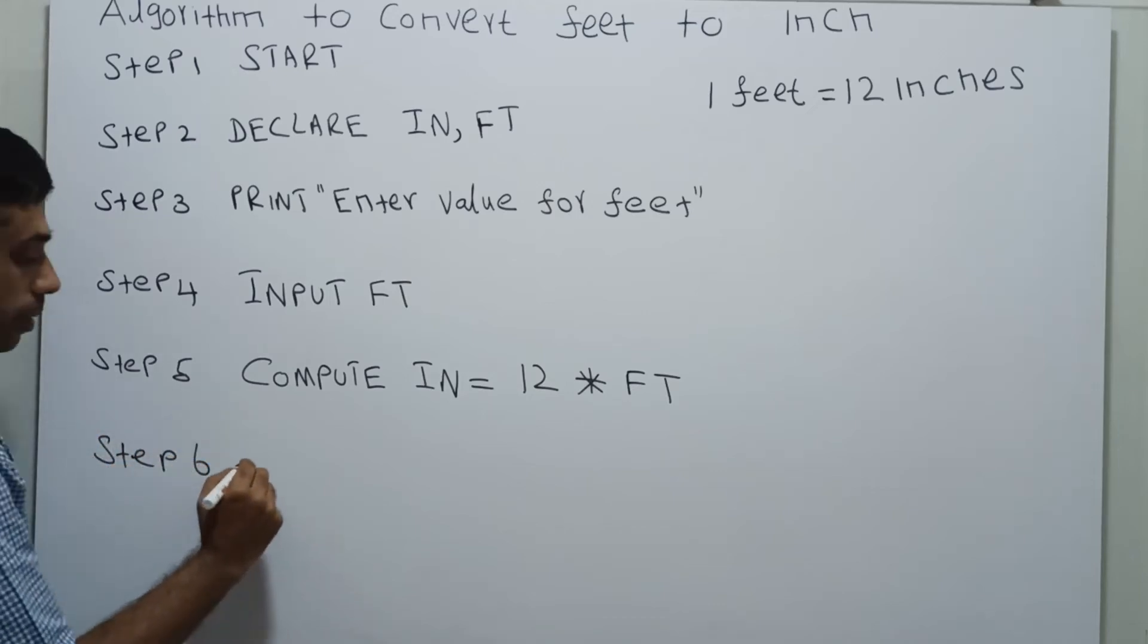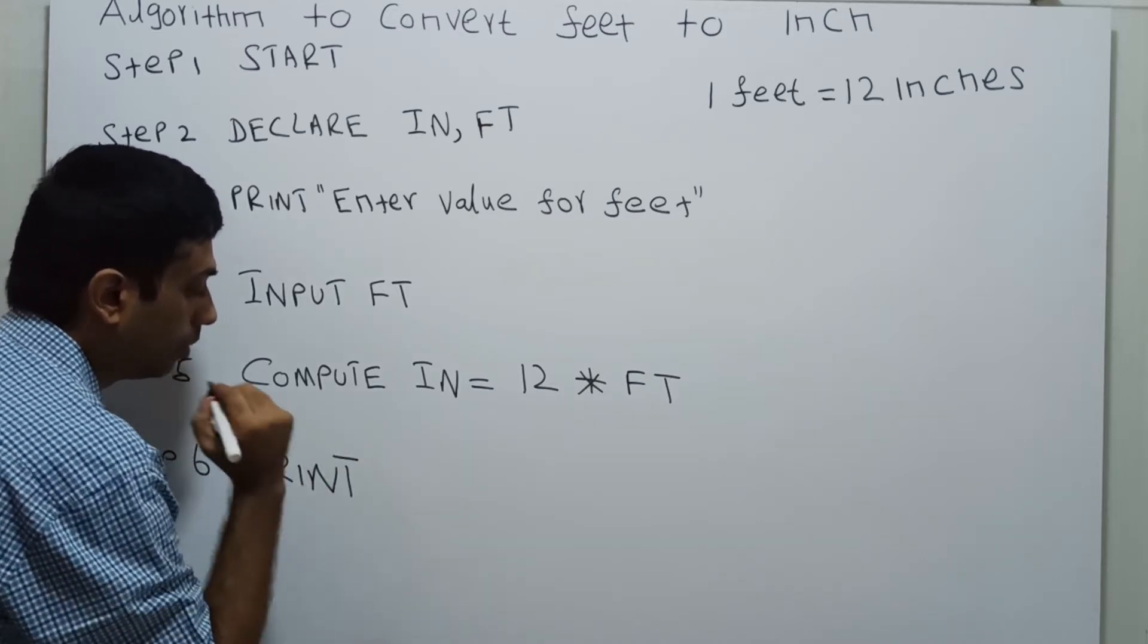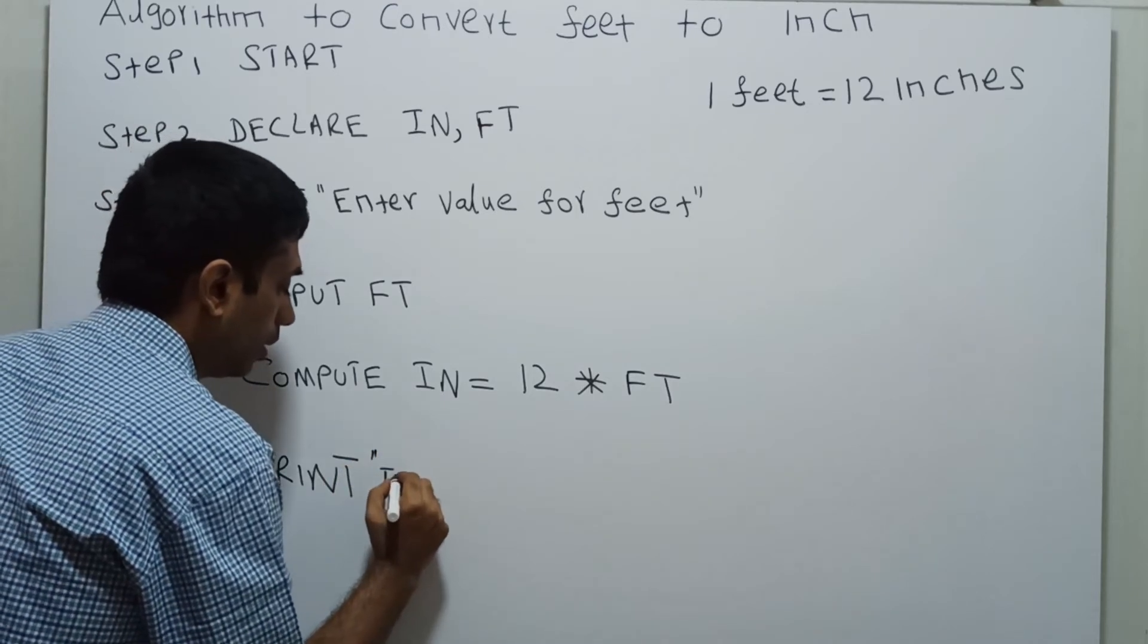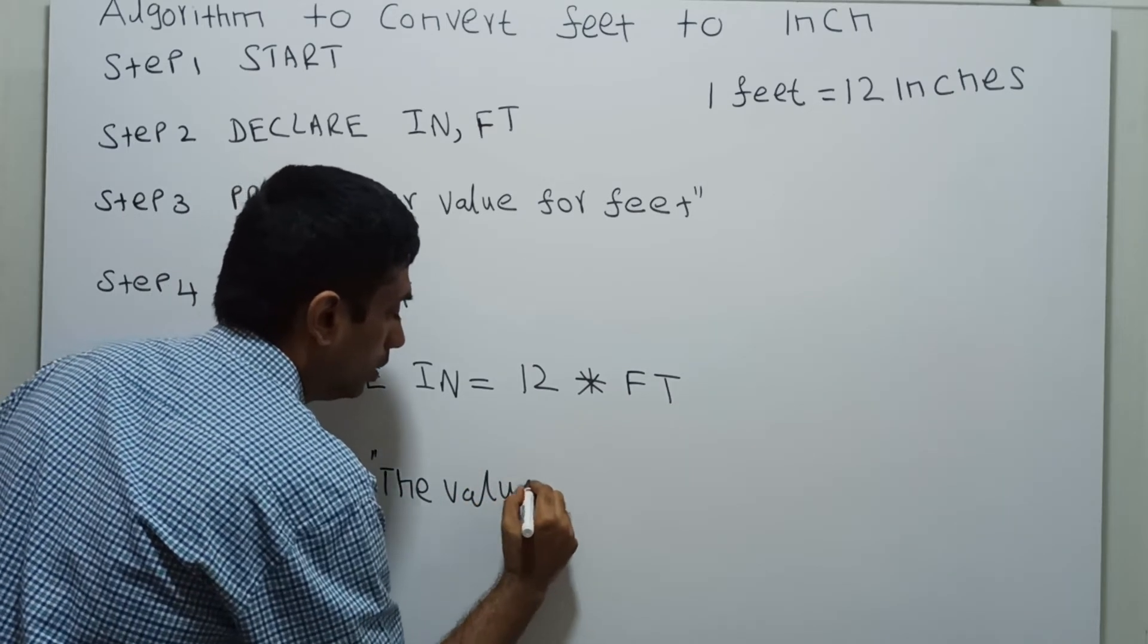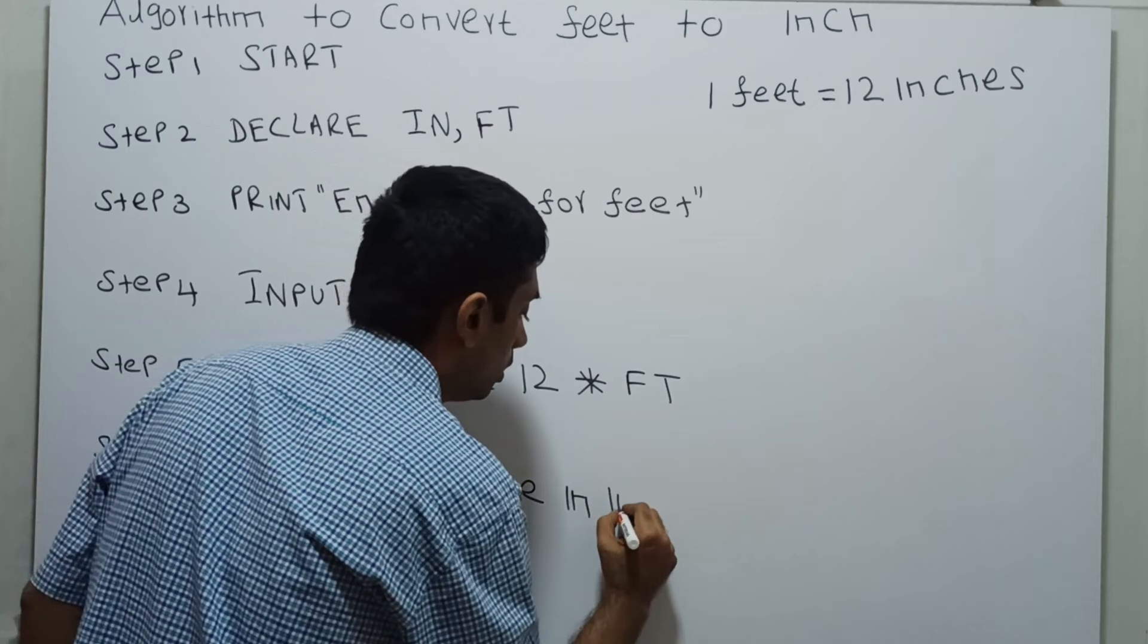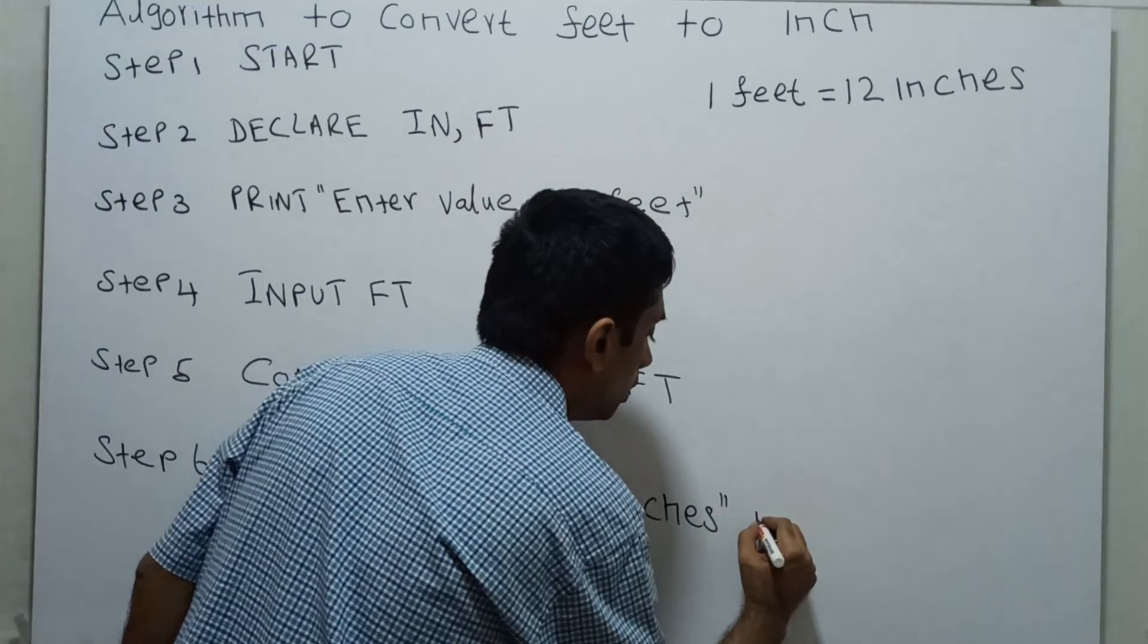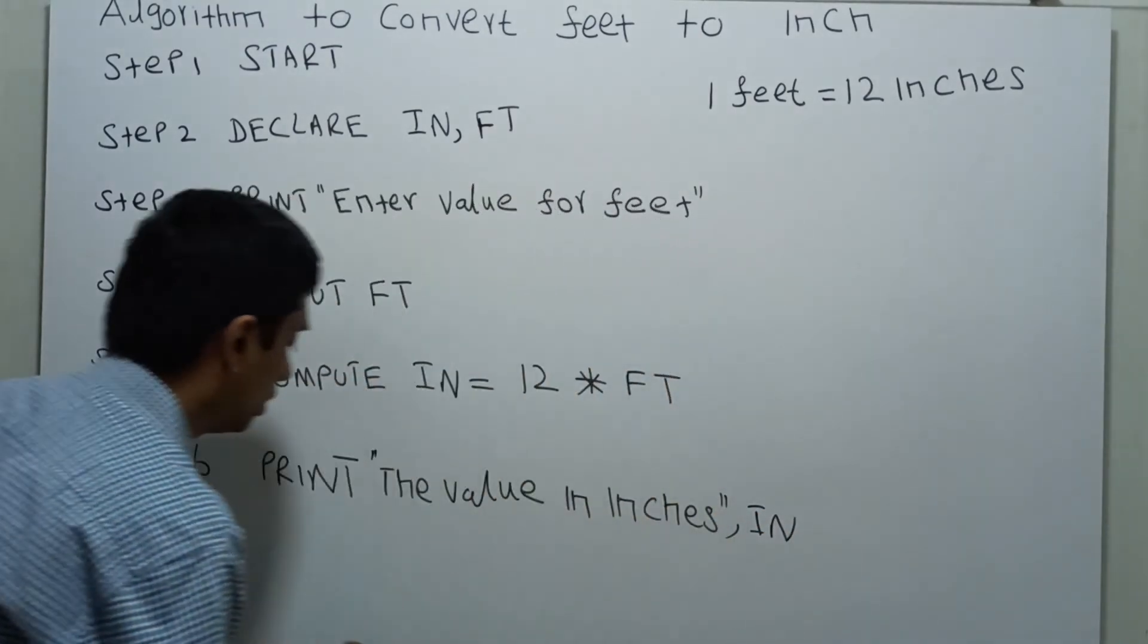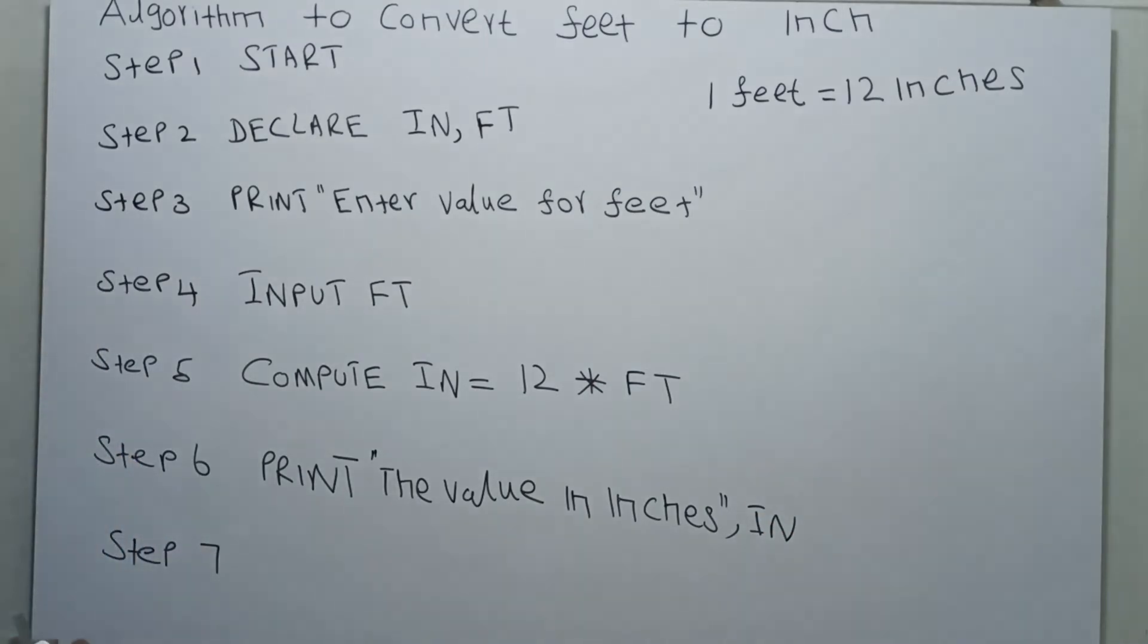Step six: PRINT the value in inches, which is IN. Step seven: STOP. This is the end of the algorithm.